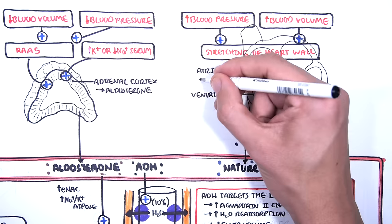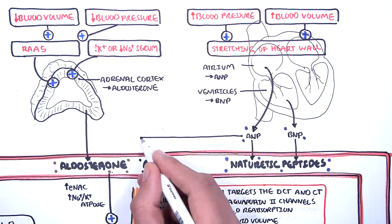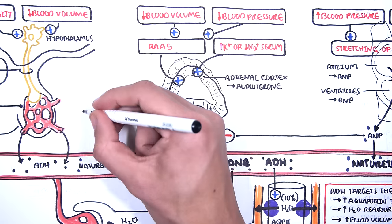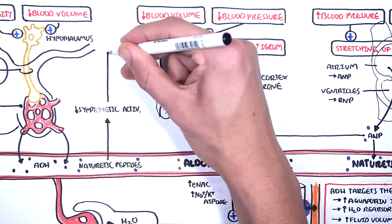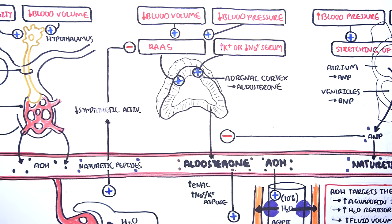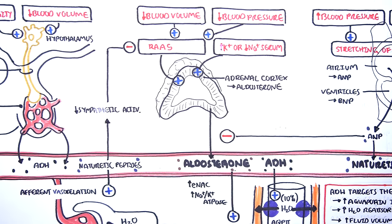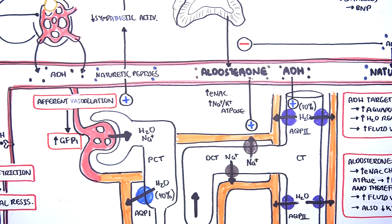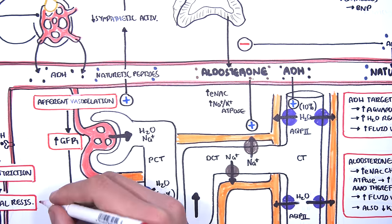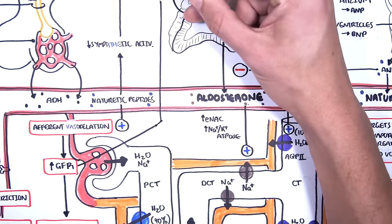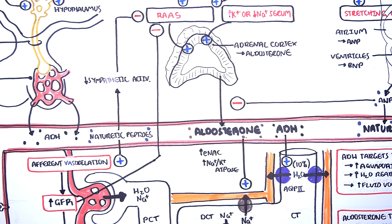ANP and BNP are your natriuretic peptides, and they will inhibit the activity of aldosterone. And they will do this in a few ways. One, they will decrease sympathetic activity, which will inhibit the release of renin, and so will inhibit the renin-angiotensin-aldosterone system altogether. Natriuretic peptides also cause afferent arterial vasodilation, which will increase glomerular filtration rate. When you increase the glomerular filtration rate, this will tell the juxtaglomerular cells at the head of the nephron to stop releasing renin, and so will inhibit the renin-angiotensin-aldosterone system altogether as well.